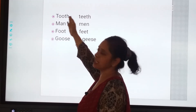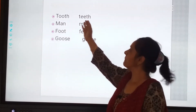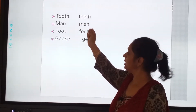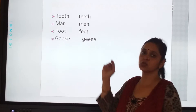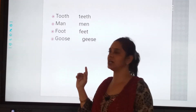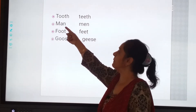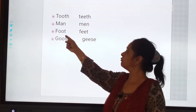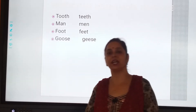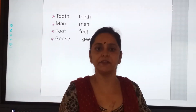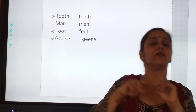Now we have to change some irregular naming words. Tooth becomes teeth. Man becomes men. Foot becomes feet. Goose becomes geese. So where we have to put S, where we have to put ES, and where we have to change F to VES — we've covered it all.